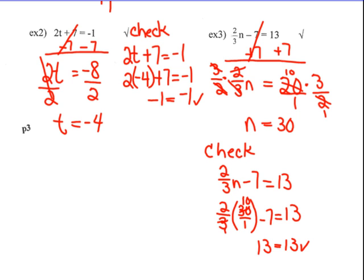The bottom of my check does not show the answer to the problem. It's not showing that negative 4 equals negative 4 in number 2 — it's showing that when I put negative 4 into the equation, my equation is balanced at negative 1 equaling negative 1. Same thing with example 3: when I put 30 in for n, my equation is balanced to 13 equals 13. The answer is n equals 30; the balanced equation is 13 equals 13. They are two different things — sometimes students mix that up.